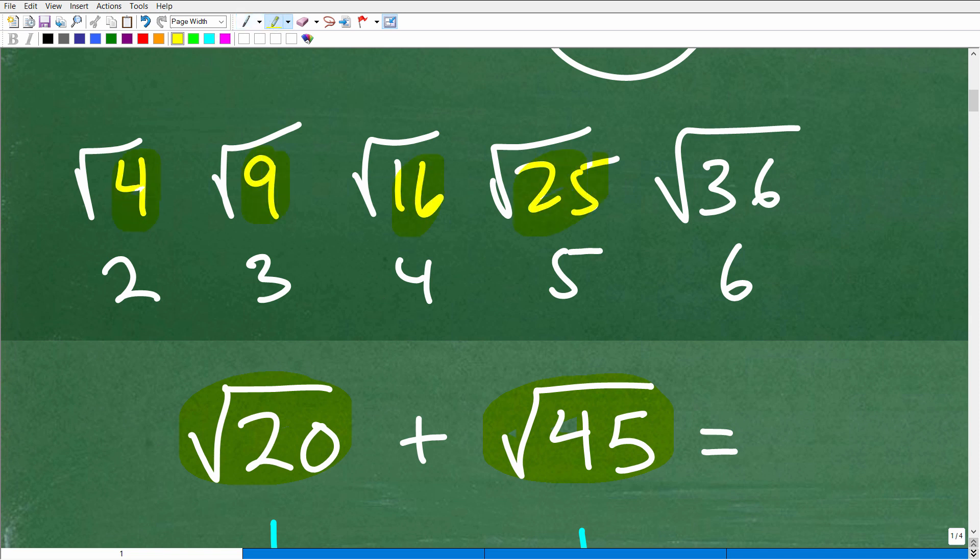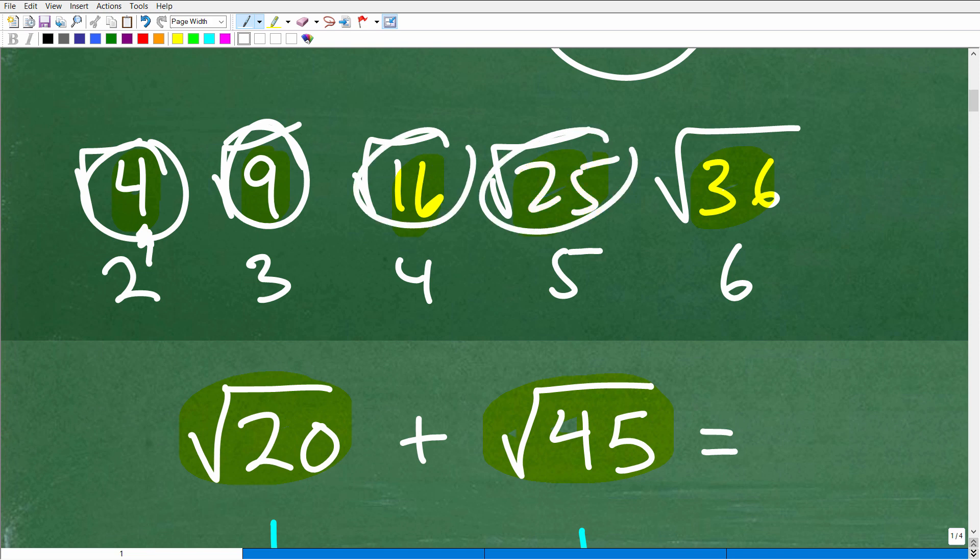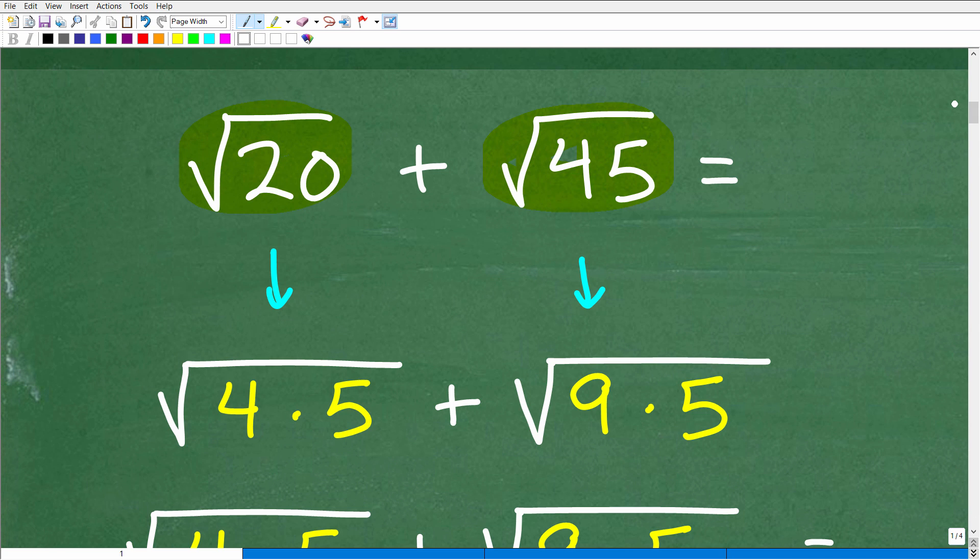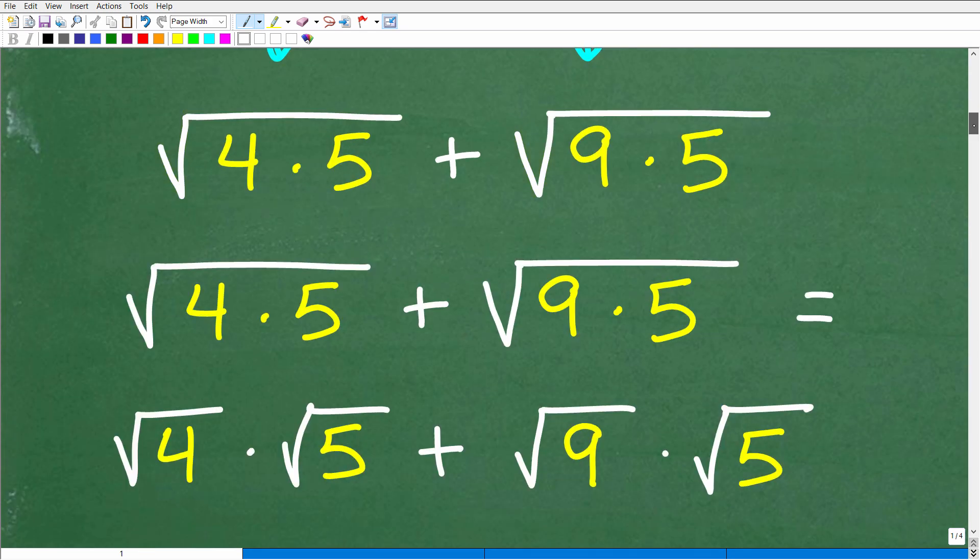But these numbers here, 4, 9, 16, 25, 36, these are perfect squares, right? Because when we square 2, it's perfectly written as 4. So we want to be on the lookout for these type of numbers: 4, 9, 16, 25, 36, etc. as factors in these numbers. OK, so the square root of 20, I can write as 4 times 5. And we love that 4 because that's a perfect square factor. And 45, we can think of that as 9 times 5. So 4 and 9 are both perfect square factors.